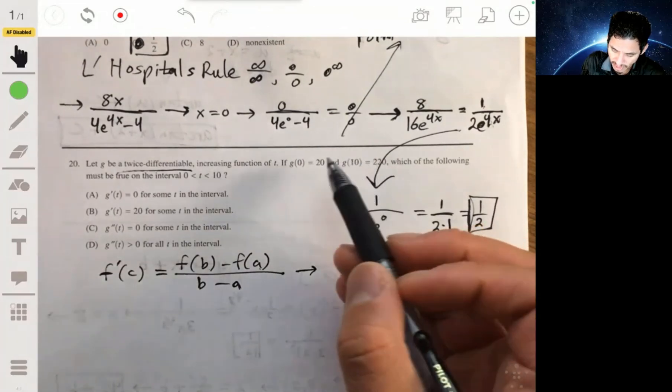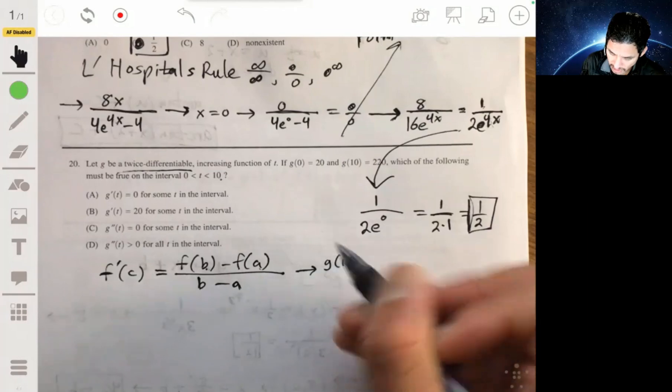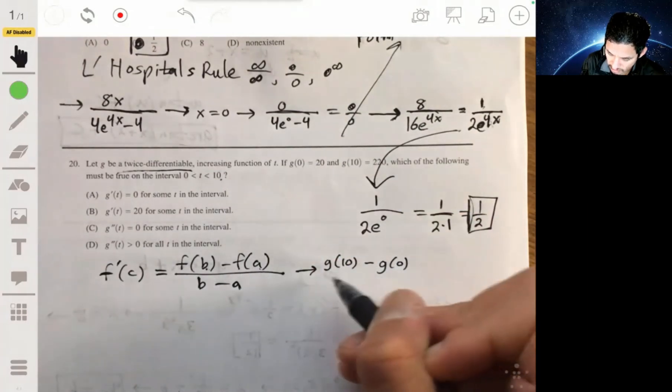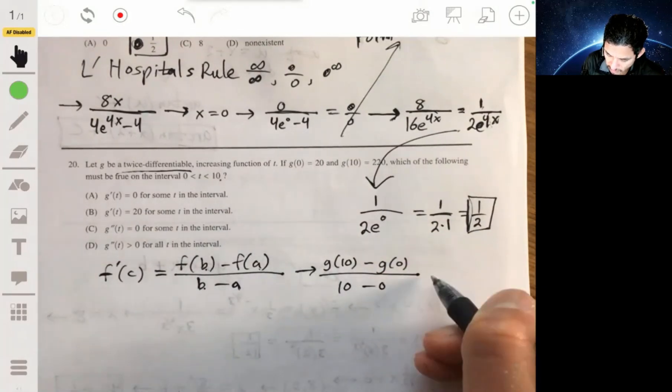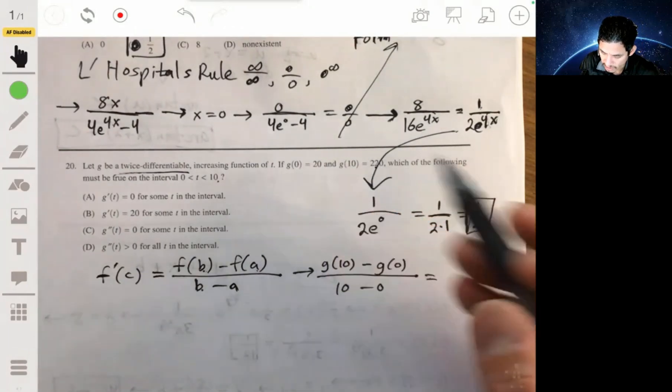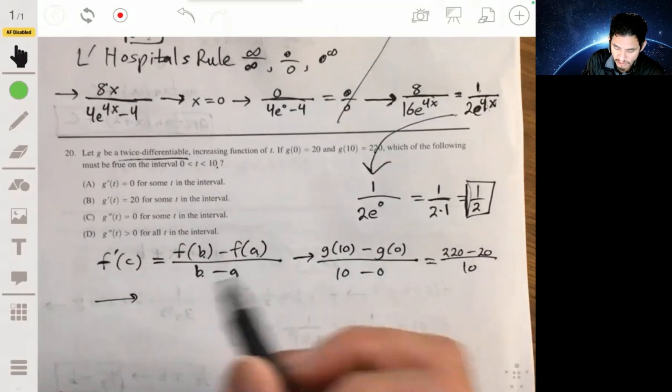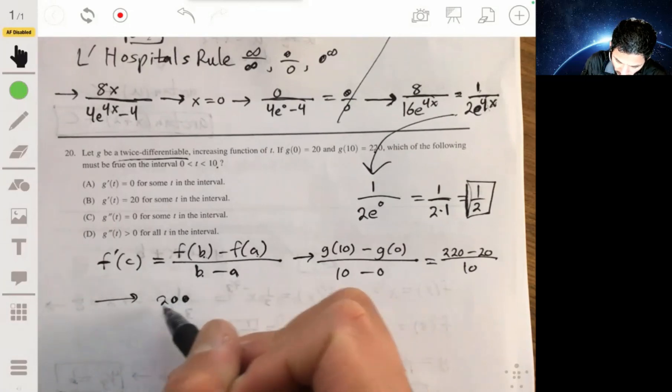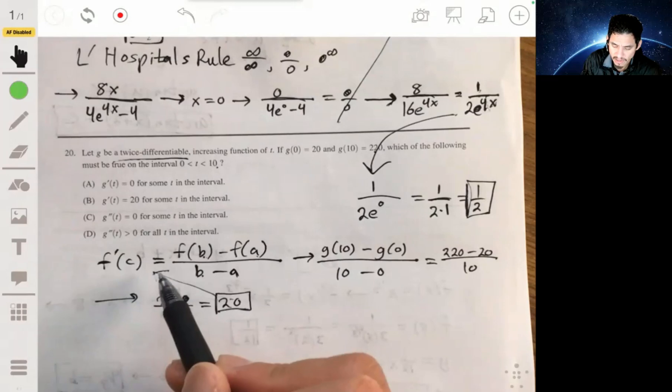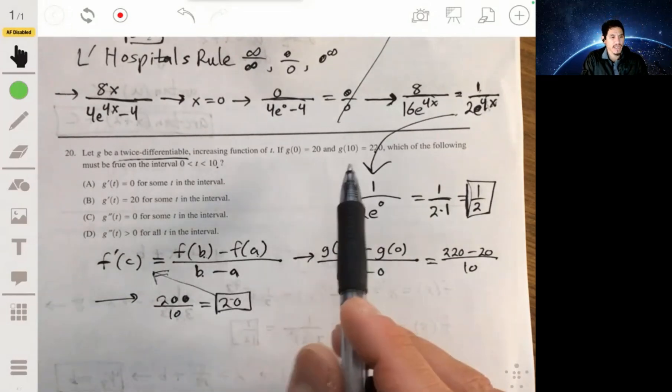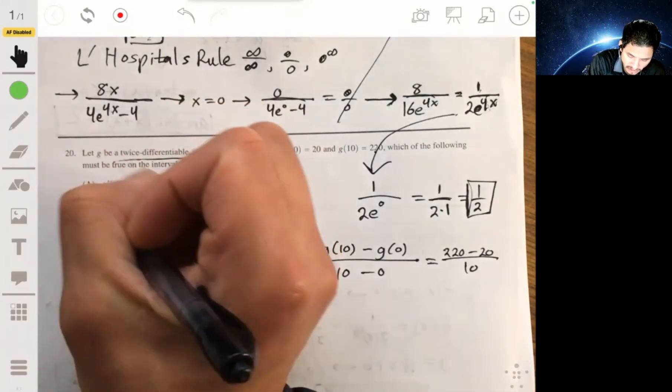In this case, what we have is your b is 10 and your a is 0. So you have g of 10 minus g of 0 over 10 minus 0. g of 10, we're told it's 220, 220 minus 20 over 10. So we get 200 over 10 or 20. So then we're saying that there is some value between 0 and 10 such that you can find that the derivative of that value will be equal to 20. So that's going to be B.